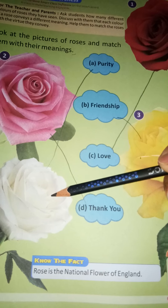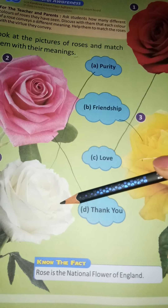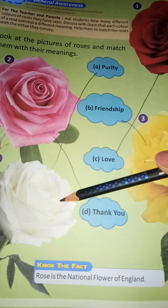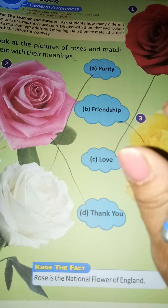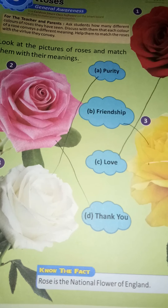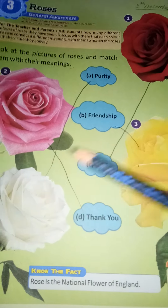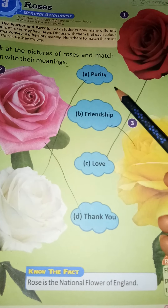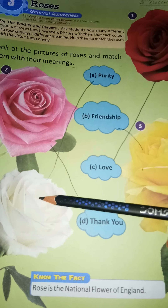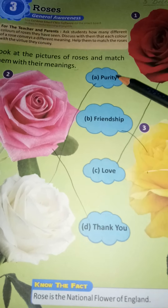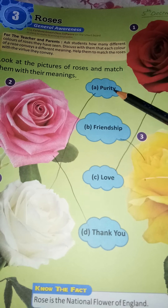Now this is a white rose. White means purity — it means pure. White rose indicates purity. You have to match white rose with option A. This is purity.